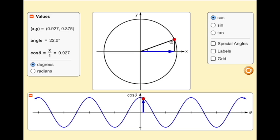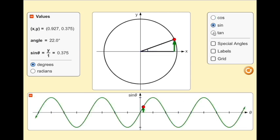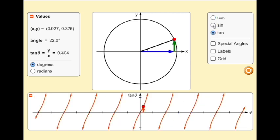Change the trig function displayed using the top right menu. The sine and tangent can be selected and viewed instead of the cosine.